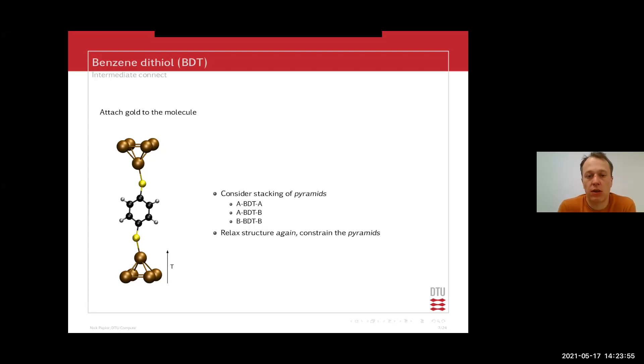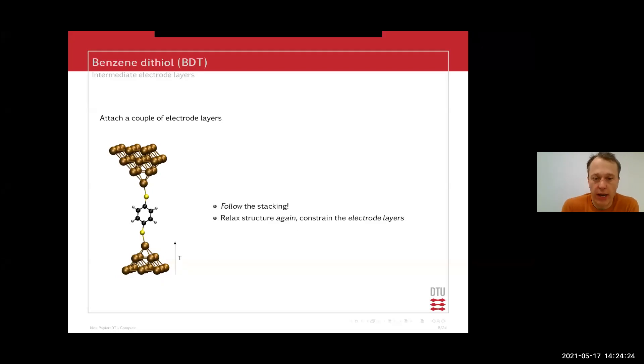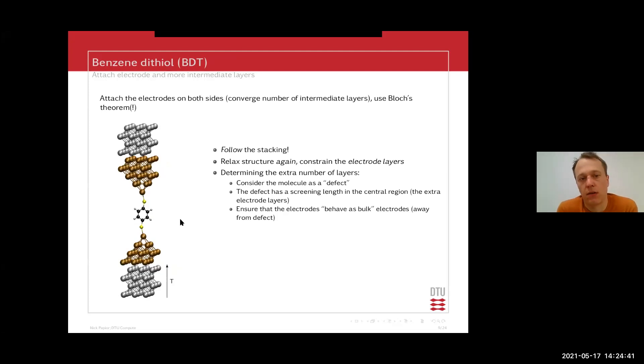So then again, you relax your structures and constrain the pyramids to be sure that you are kind of stretching your molecule to the desired length. And here it's always a problem of what is the correct distance on the elongation of your molecules, but you have to manually figure out how to do this in the best way such that your eigenstates and the description of your molecule electronic structure is sufficiently good. Then you add a couple of more layers, relax structure again, and now you are going to constrain only the outermost layers there. So then you will be relaxing the pyramids and the molecule together.